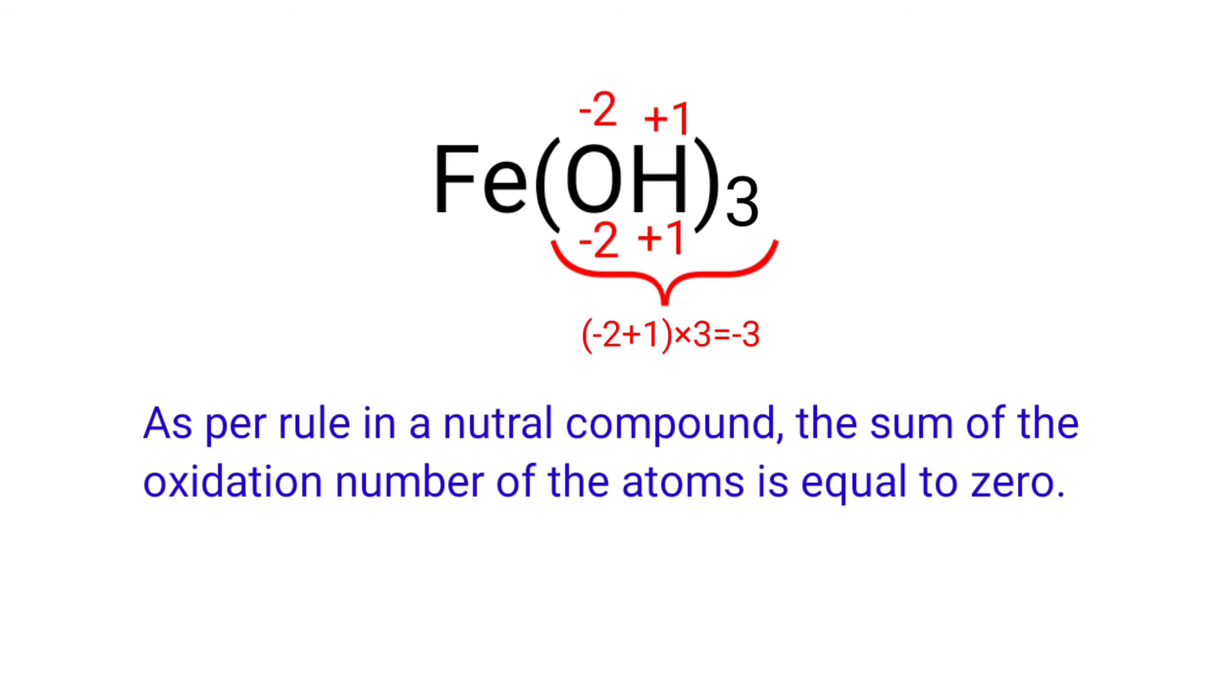As per rule in a neutral compound, the sum of the oxidation number of the atoms is equal to 0. So the numbers along the bottom must add up to 0.